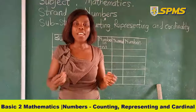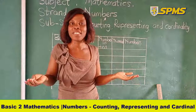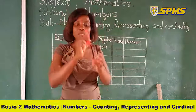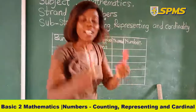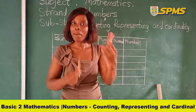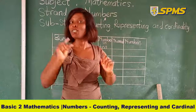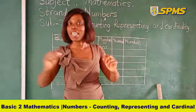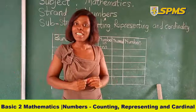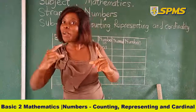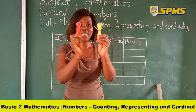Very good. Representing the number 12 — how many bundles and how many loose straws would you have? You are going to have 1 bundle with 2 loose straws. 13 will be 1 bundle with 3 loose straws. 14: 1 bundle with 4 loose straws. 15: 1 bundle with 5 loose straws. 16: 1 bundle with 6 loose straws. 17: 1 bundle with 7 loose straws. 18: 1 bundle with 8 loose straws. 19: 1 bundle with 9 loose straws. 20: you are not going to have 10 new straws again — you are going to have another bundle. So you are going to have 2 bundles making 20.